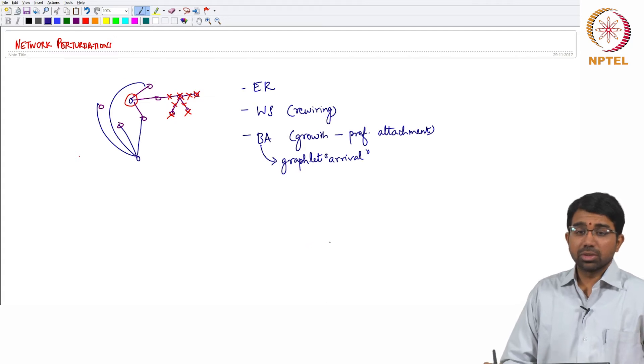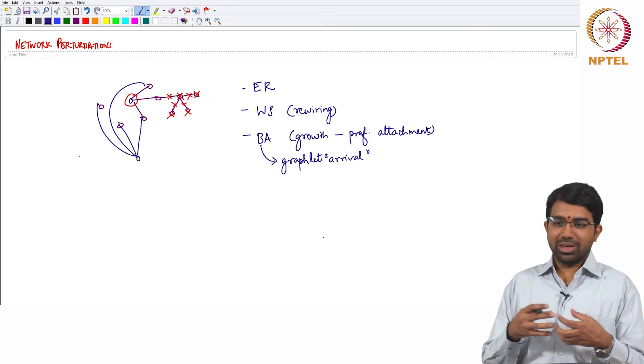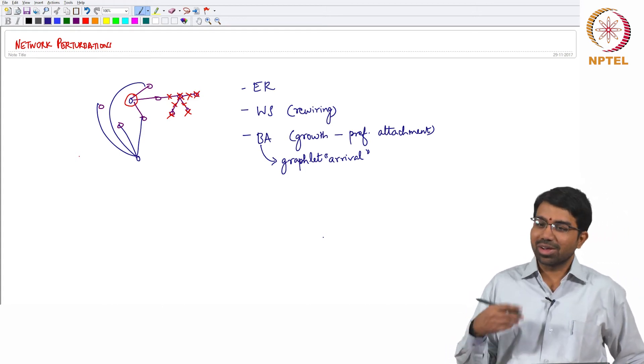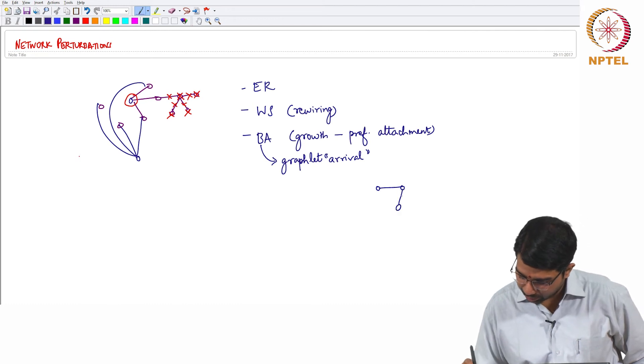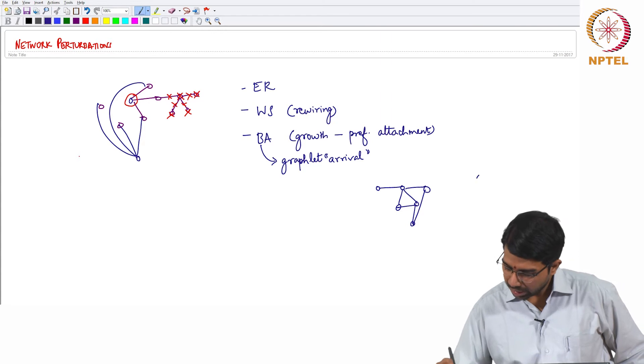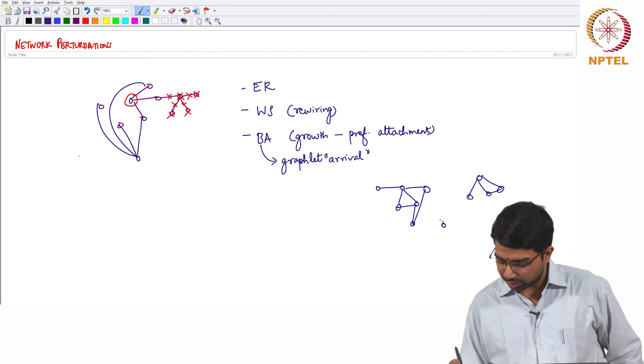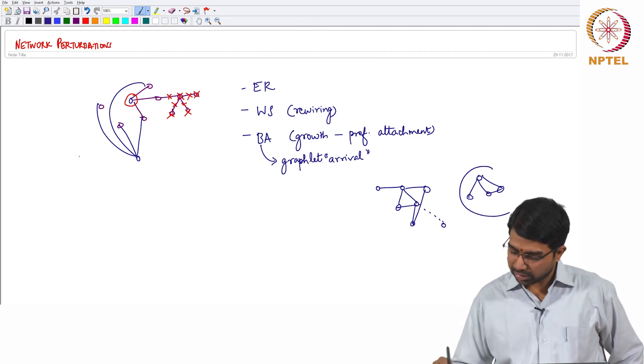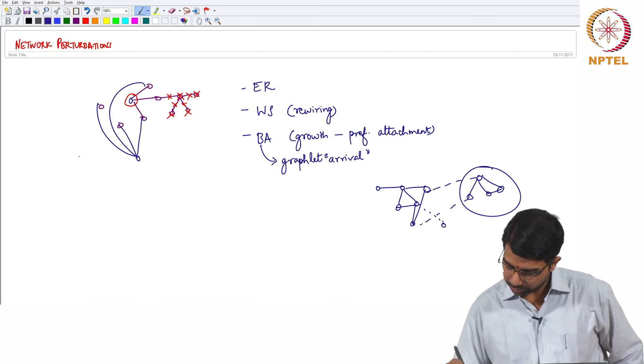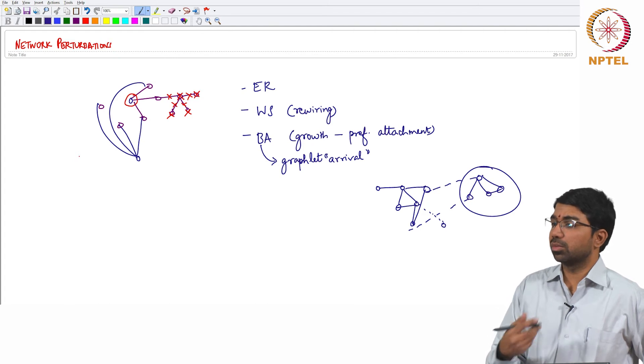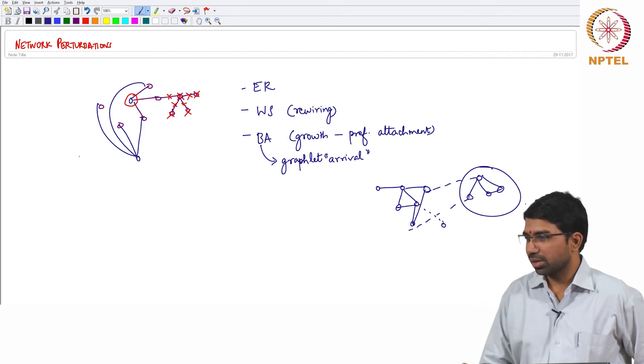So typically when you look at social networks that becomes very important, not so much in biological networks except if you have community networks. Obviously social networks are also of interest in biology if you want to study the transmission of a disease and so on. So this basically means that you have some existing network and this is the network that arrives. It is not a single edge. Instead you have this graphlet or this subgraph arriving. So now this might connect in different ways. So this could be potentially another network growth model, and this is indeed a sort of perturbation to the network.